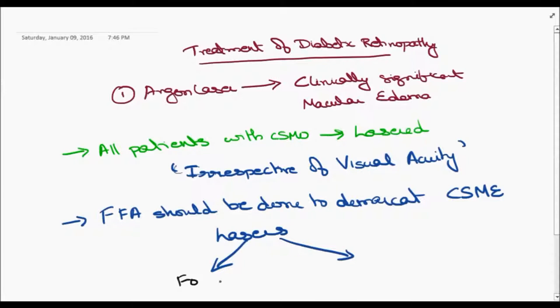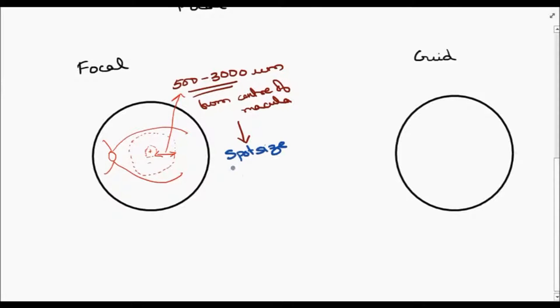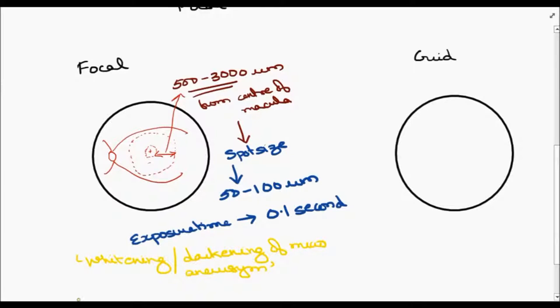Lasers are usually two types: focal and grid. The focal laser is done from 500 microns to 3000 microns from the center of macula, and spot size is 50 to 100 microns, and exposure time is 0.1 second. The endpoint is whitening or darkening of the microaneurysm.